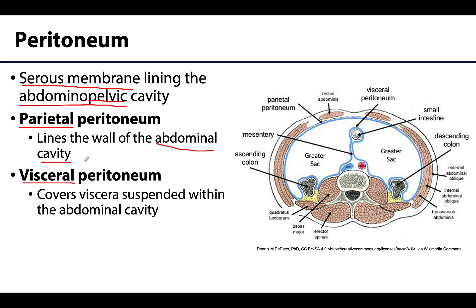The visceral peritoneum is going to be firmly adhered to at least some surface or surfaces — if not all of them — of abdominal viscera, and it's going to suspend that viscera into or within the abdominal cavity region.